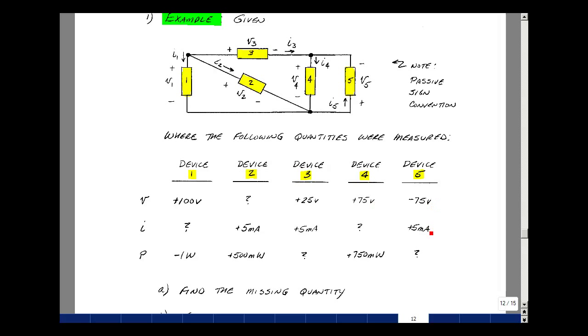And then lastly, I've got the voltage times the current. That would be equal to minus 375 milliwatts. You can find the work below and on the top of the next page.